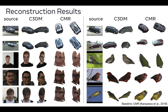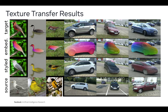We compare the predicted reconstructions with CMR on categories of cars, birds, and human faces. C3DM, being nonparametric, reconstructs each pixel including more detailed shapes. As a by-product, we get canonical maps that define correspondences across instances. In this figure, we show the color-coded spherical embeddings and use them for texture transfer.